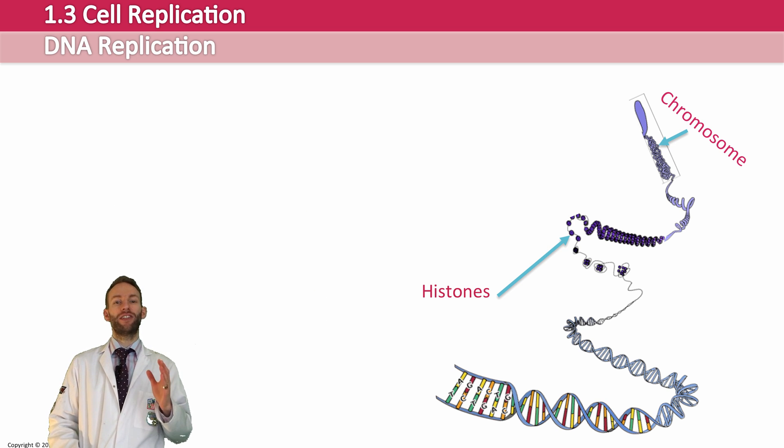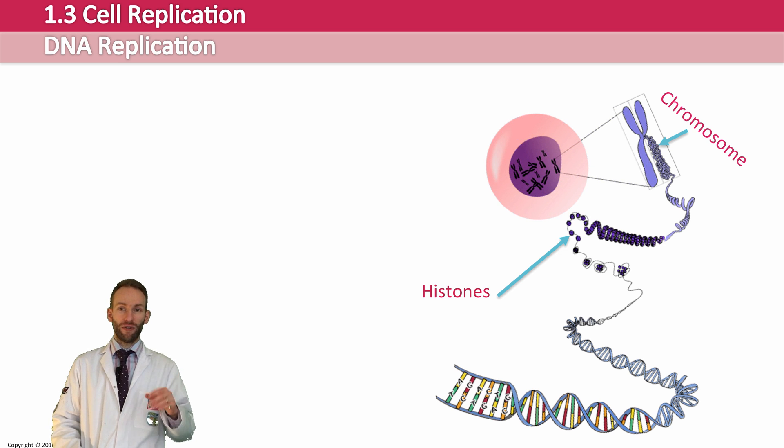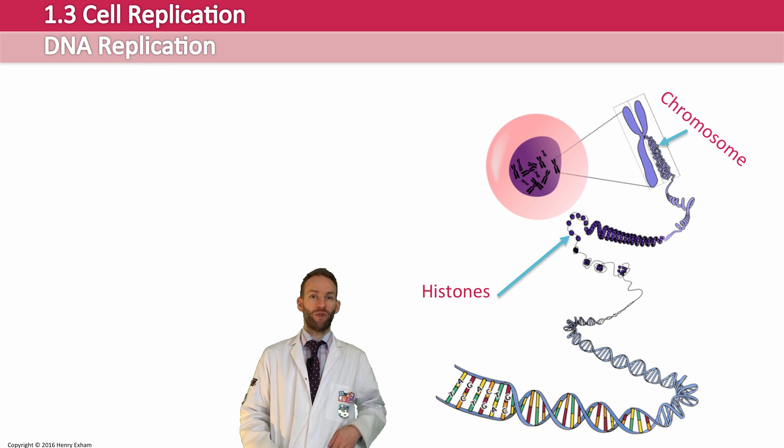That is a double chromosome. That's what it looks like once it has been replicated. Once all the DNA is copied and it's just about to divide. And you can split that double chromosome, that double copy there, into two what we call chromatids. And they're joined in the middle by something called a centromere.